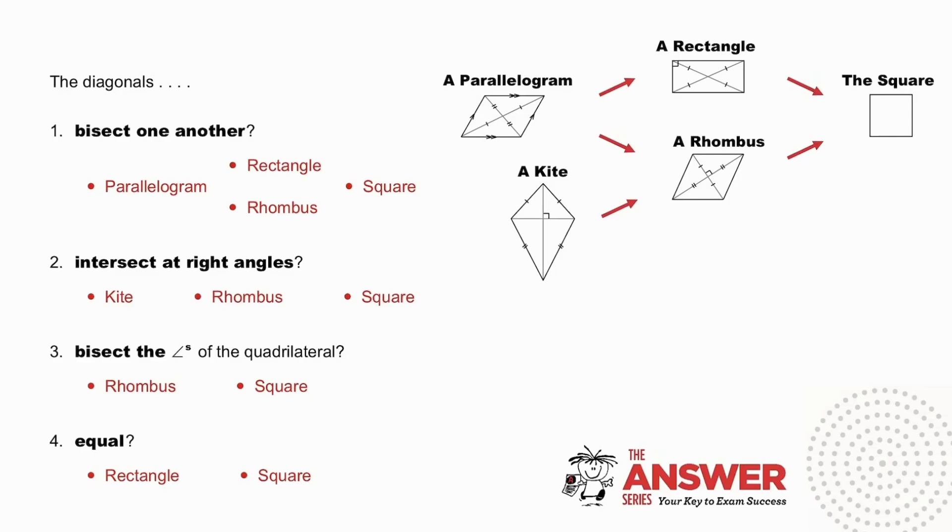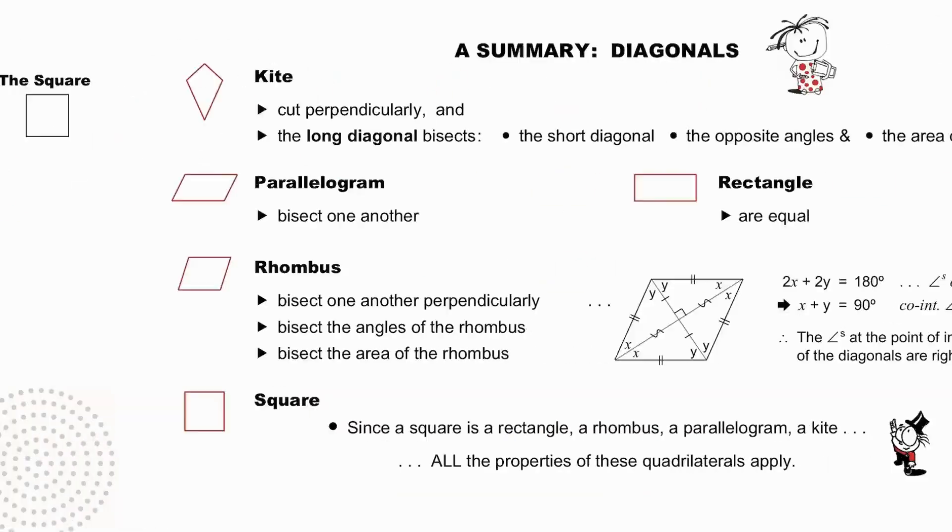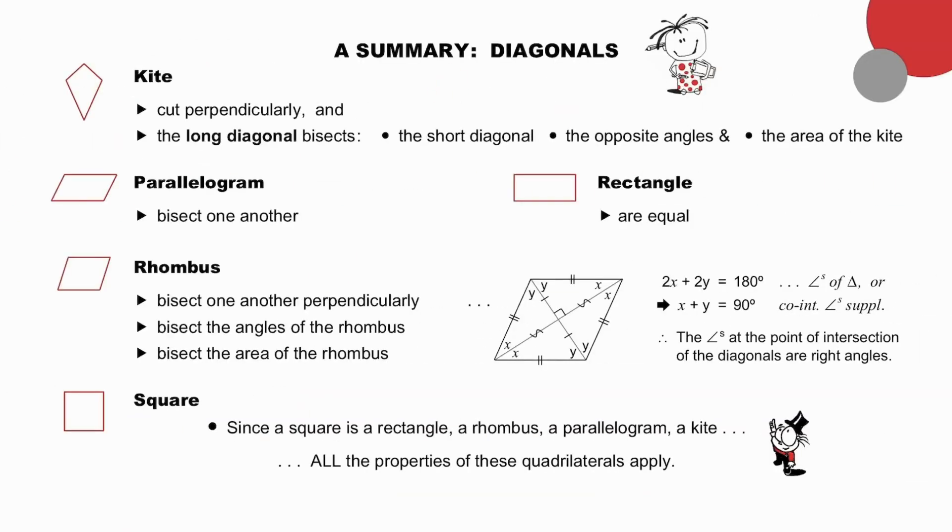Pause to reinforce this thinking. Pause to study a summary of facts about the diagonals of each quadrilateral, noting especially the proving of facts about the diagonals of a rhombus, which are very busy. A square, since a square is a rectangle, a rhombus, a parallelogram, a kite. All the properties of these quadrilaterals apply to the square.